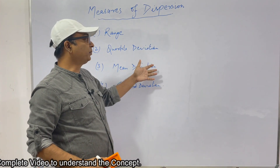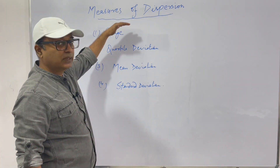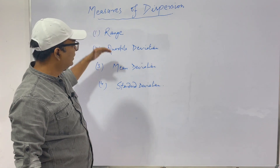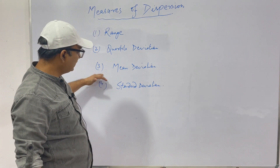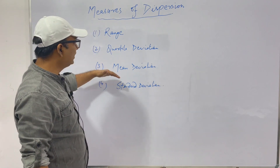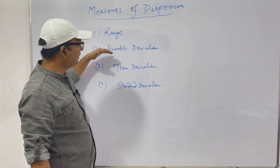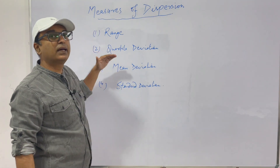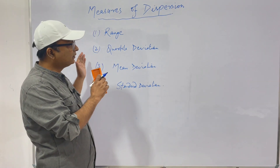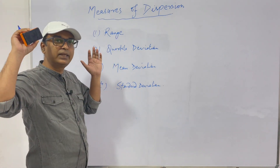Let's see how many of these topics we can cover in one video. Range and quartile deviation are smaller concepts, while mean deviation and standard deviation are the main topics. I'll explain each topic and solve examples along the way so that these measures are very clear in your mind.